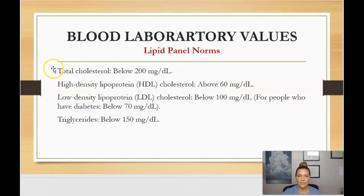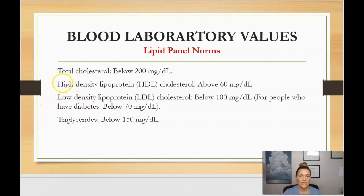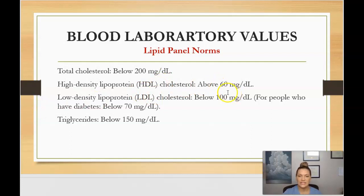Here are your lipid panel norms. Total cholesterol — which includes the HDL, LDL, and triglycerides — should be below 200. Your HDL should be above 60. Your LDL should be below 100. And your triglycerides should be below 150.